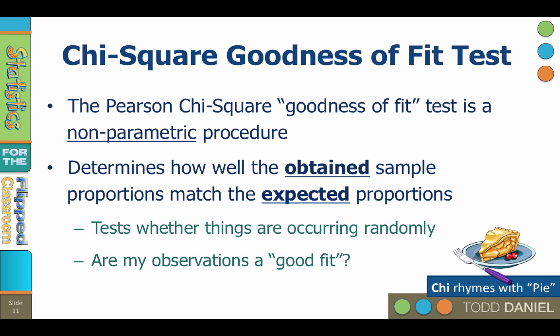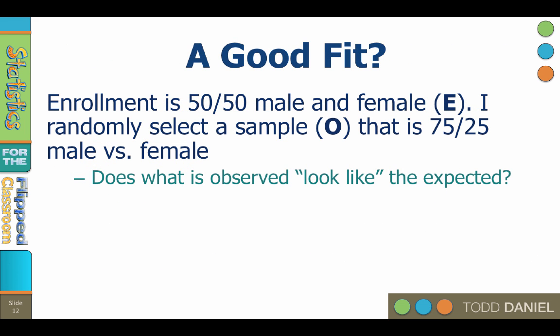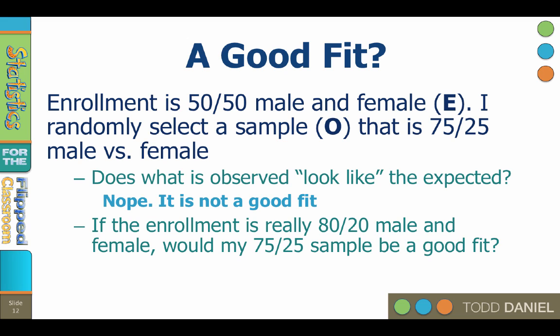What do I mean by a good fit? Imagine that enrollment at my university is 50-50 male and female. If I choose a sample at random from that population, you would expect the proportions of males and females to be 50-50. But if I look at a certain department and find enrollment is 75% male, 25% female, does that department match the proportions in the population? Nope — not a good fit. On the other hand, if my university enrollment is really 80-20 male and female, would a 75-25 sample be a good fit? Yes — the sample looks like the population. Not a perfect fit, a good fit.